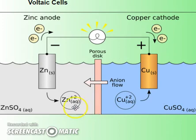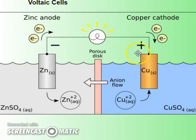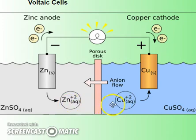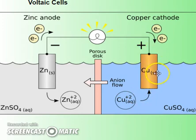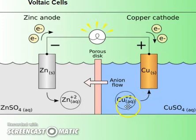Here's a picture of a voltaic cell. You have zinc, the more reactive metal, with electrons moving across the wire while zinc ions move away from the electrode. On the other side, copper ions move toward the electrode as electrons arrive at the copper metal, allowing the copper to be reduced and gain those electrons.